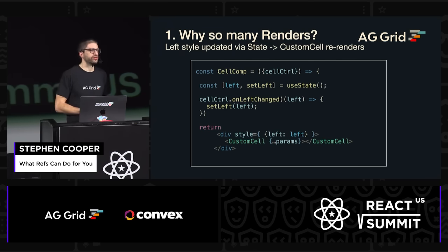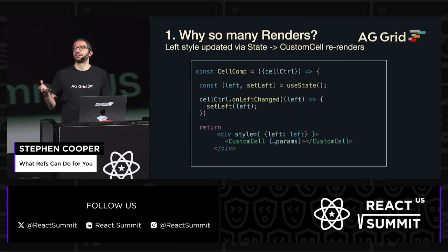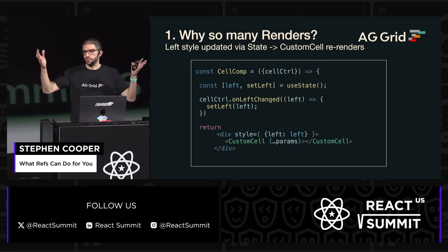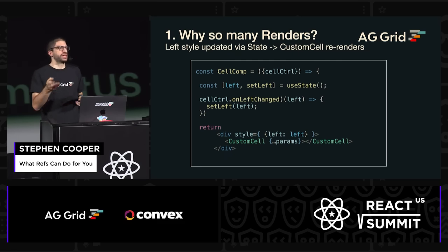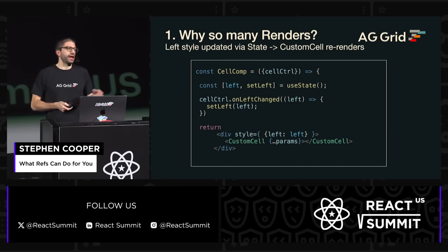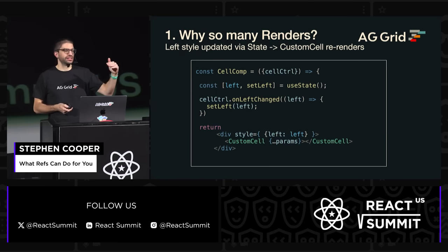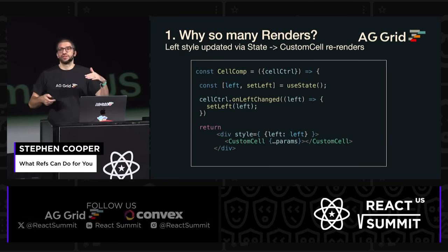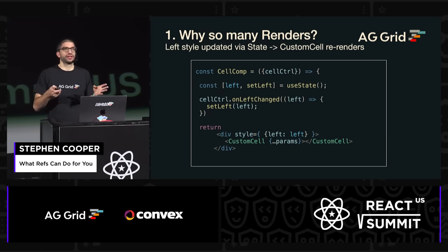Why is this component rendering so much? In our cell component, we were setting the style via the state property — say we've got left here. Our cell controller, which is what controls where all these columns are, was saying the left position is changing, and that's what you would expect, and we would simply update the state. But because we're updating the state, React is re-rendering this whole component. And because the state is being updated on that div, the custom cell is a child of that. So if there's no memoization or any kind of caching there, that is also being re-rendered.